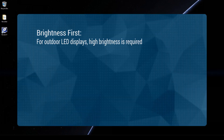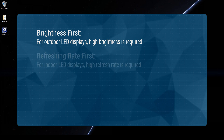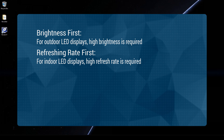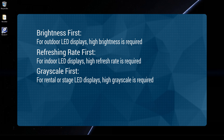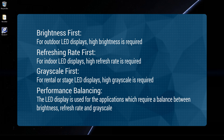Step 3 - Brightness first: For outdoor LED displays, high brightness is required. Step 4 - Refresh rate first: For indoor LED displays, high refresh rate is required. Step 4 - Grayscale first: For rental or stage LED displays, high grayscale is required. Step 5 - Performance balancing: The LED display is used for applications which require a balance between brightness, refresh rate, and grayscale.